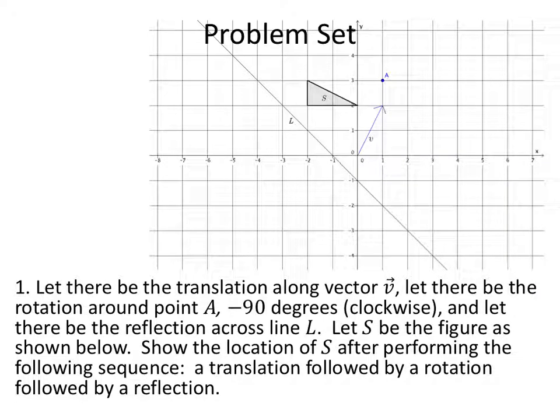Here's the problem set. Let there be the translation along that vector. Then let there be a rotation around point A, negative 90 degrees clockwise, and let there be the reflection across line L. Let S be the figure as shown below, show the location of S after performing the following sequence: translation followed by rotation followed by reflection.